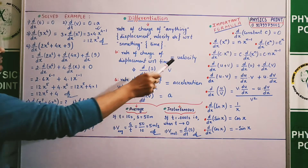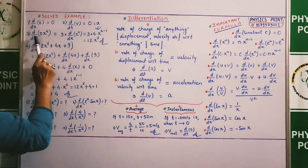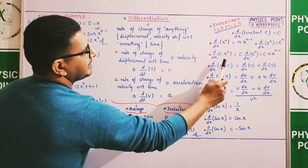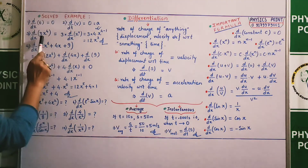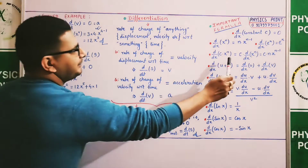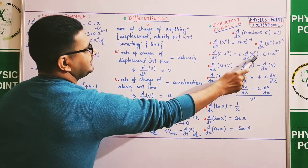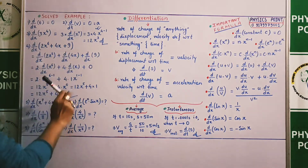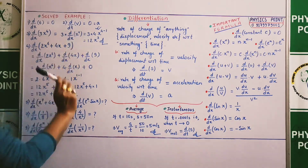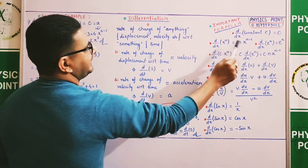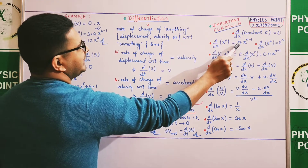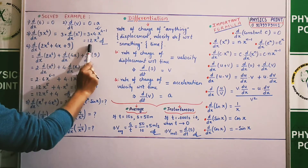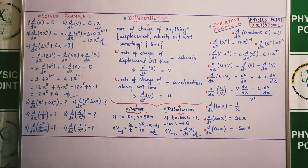एक और example: d/dx of 3x⁴। पहले constant 3 को बाहर ले लिया। अंदर बचा x⁴। अब x^n formula apply करेंगे — power 4 को multiply में लिख देंगे और power में से 1 घटाएंगे। तो 3 × 4 × x^(4−1) = 12x³।